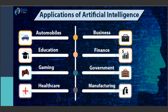Now coming to the applications of AI - however vast and complicated it is, the usage is vast again and that is why the opportunity is vast. Industries include: automobile, education, gaming, healthcare, business, finance, government, manufacturing - you name it and all domains are using AI at this current point of time. If you want to get into AI you should start small - start with learning R, Python, and other things because data science is part of AI.